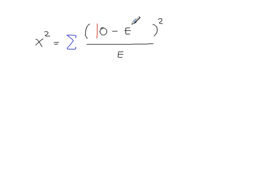Put two vertical lines like this and I'll come back to what they mean. Minus 0.5. There you go, that's the Yates formula.